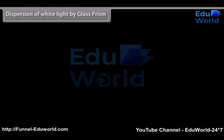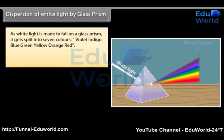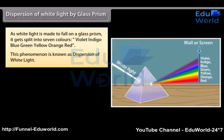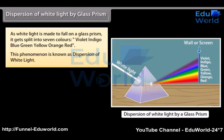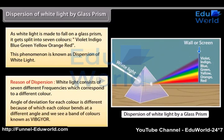Dispersion of white light by a glass prism. When white light is made to fall on a glass prism, it gets split into seven colors: violet, indigo, blue, green, yellow, orange, red. This phenomenon is known as dispersion of white light. White light consists of seven different frequencies which correspond to a different color. The angle of deviation for each color is different, because of which each color bends at a different angle and we see a band of colors known as VIBGYOR.